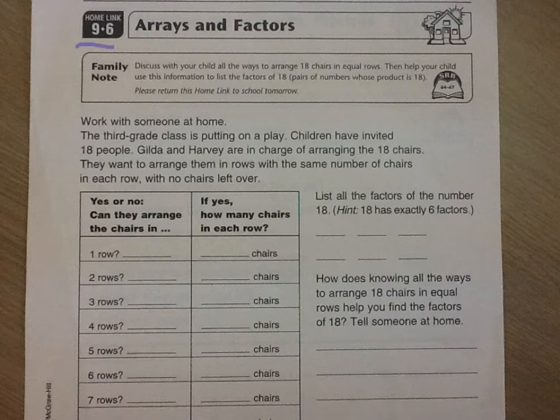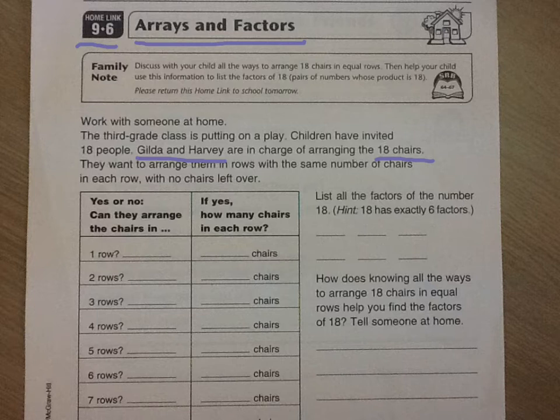Here we have homework 9.6 which is called Arrays and Factors. This is giving us a story to help us think about multiplication and division a little bit. Gilda and Harvey need to arrange 18 chairs for a performance.